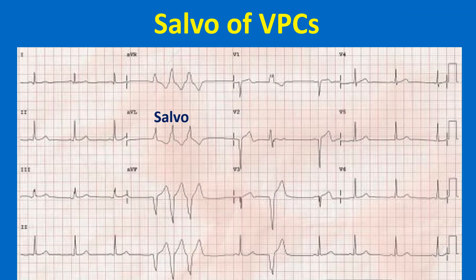The ECG shows a VPC salvo. The original meaning of the word salvo is a series of shots fired in rapid sequence from a gun or simultaneously from multiple guns. An isolated VPC is seen subsequently. QS complexes are seen in V1 to V3, suggesting a previous myocardial infarction.